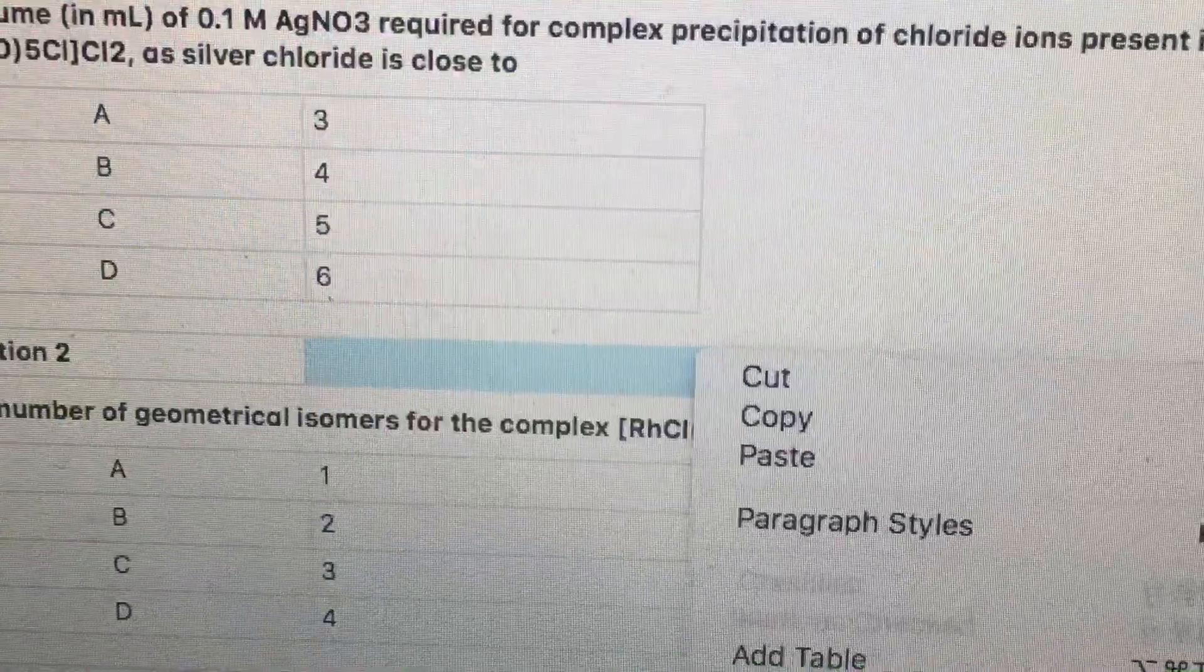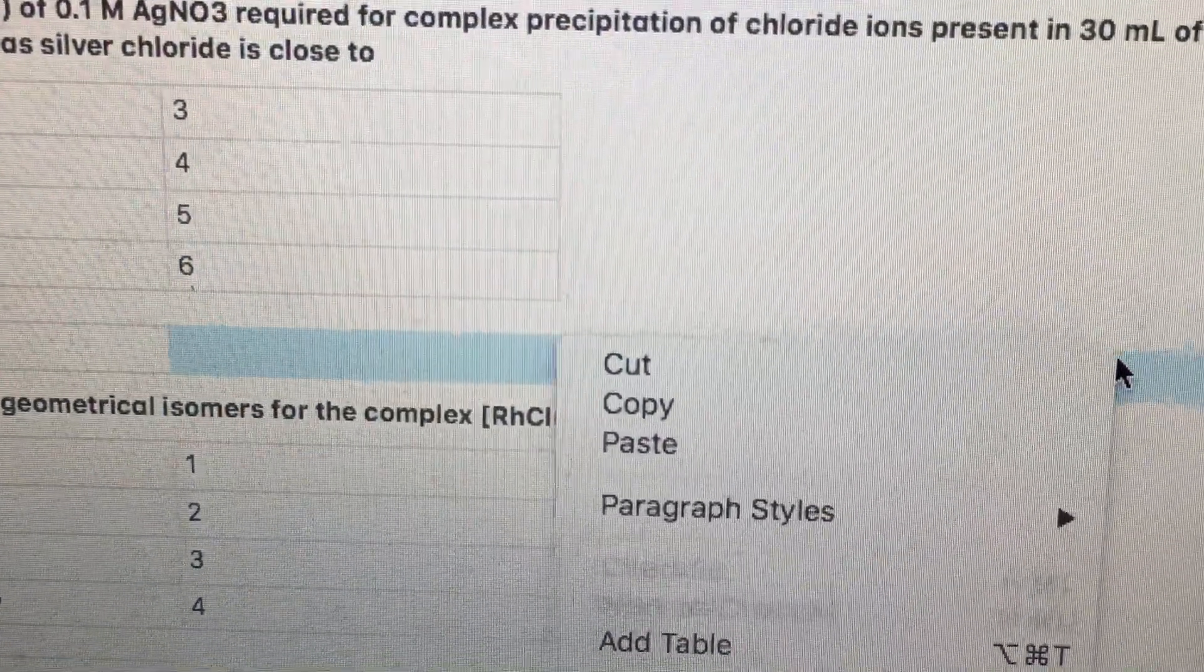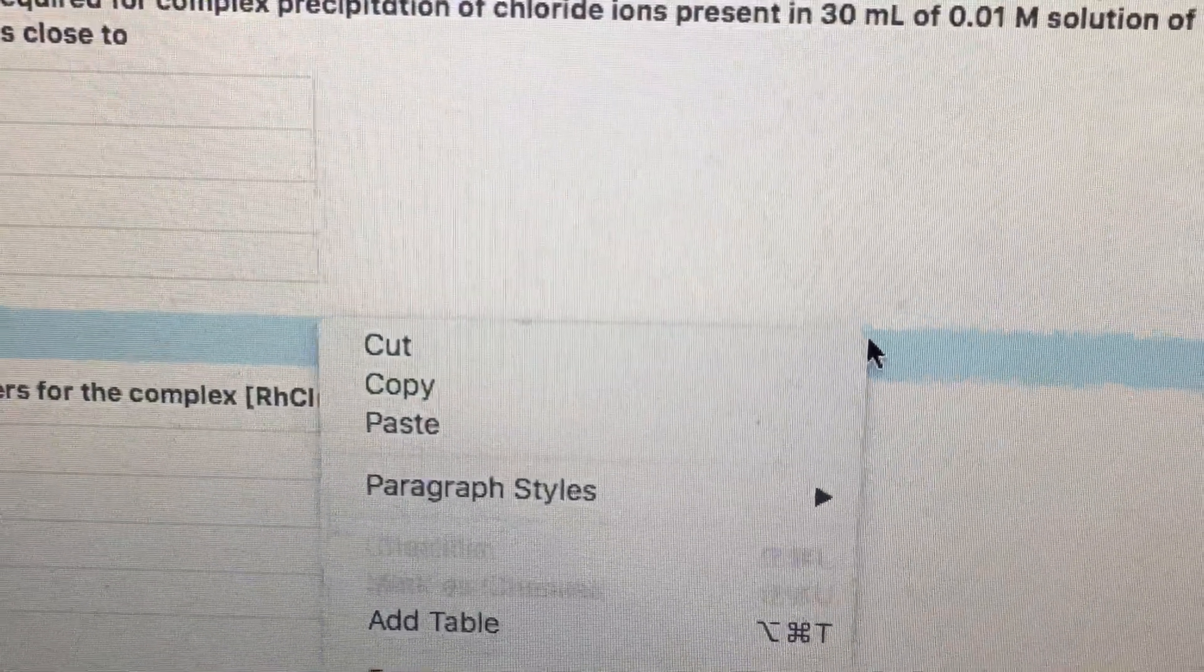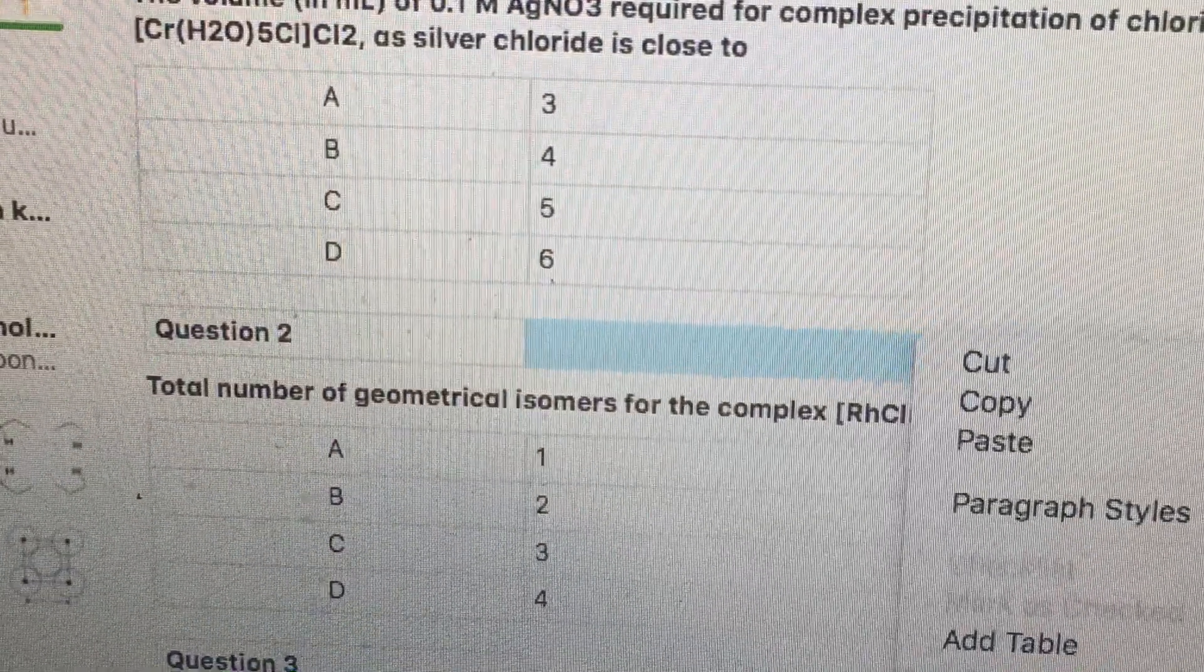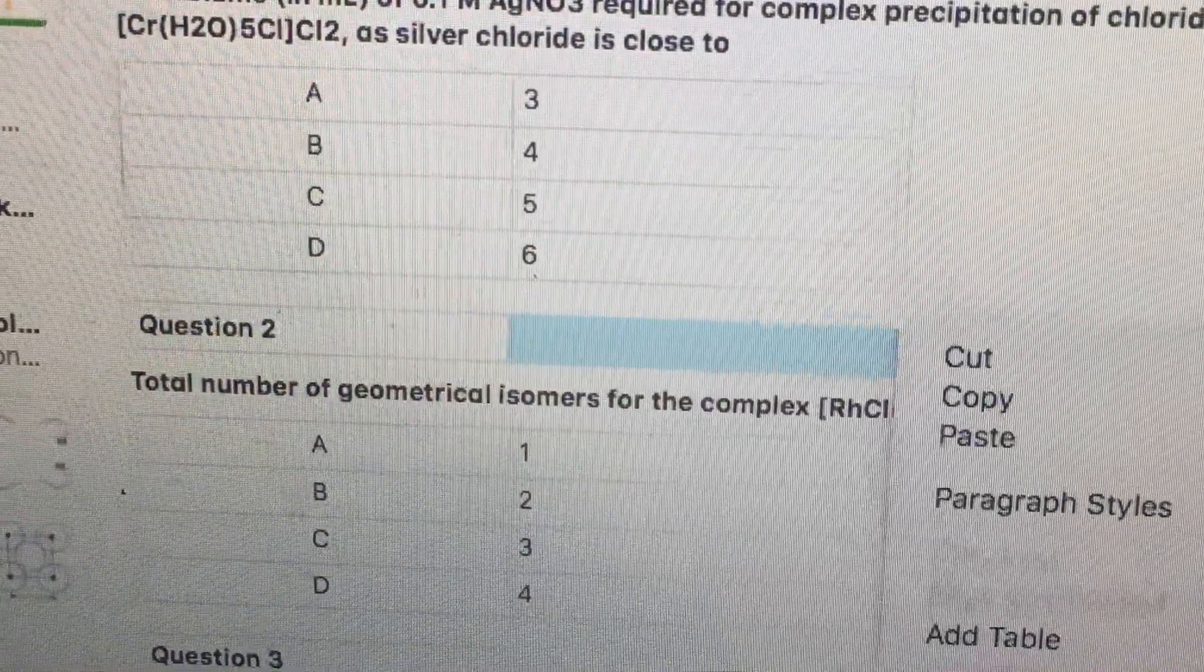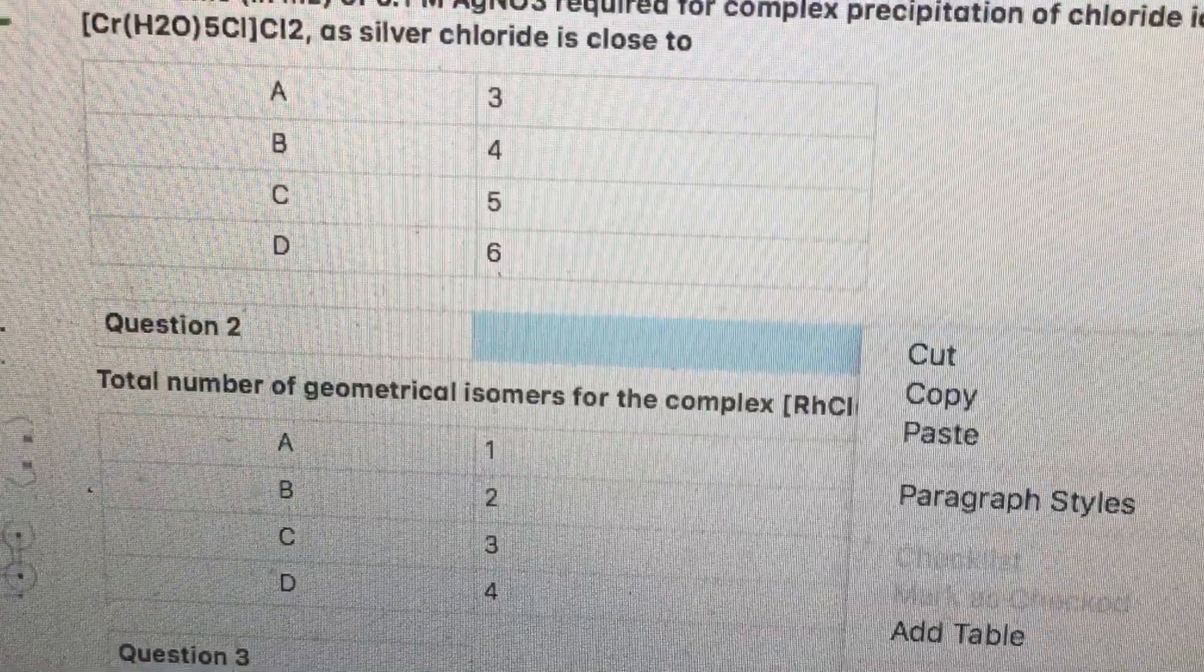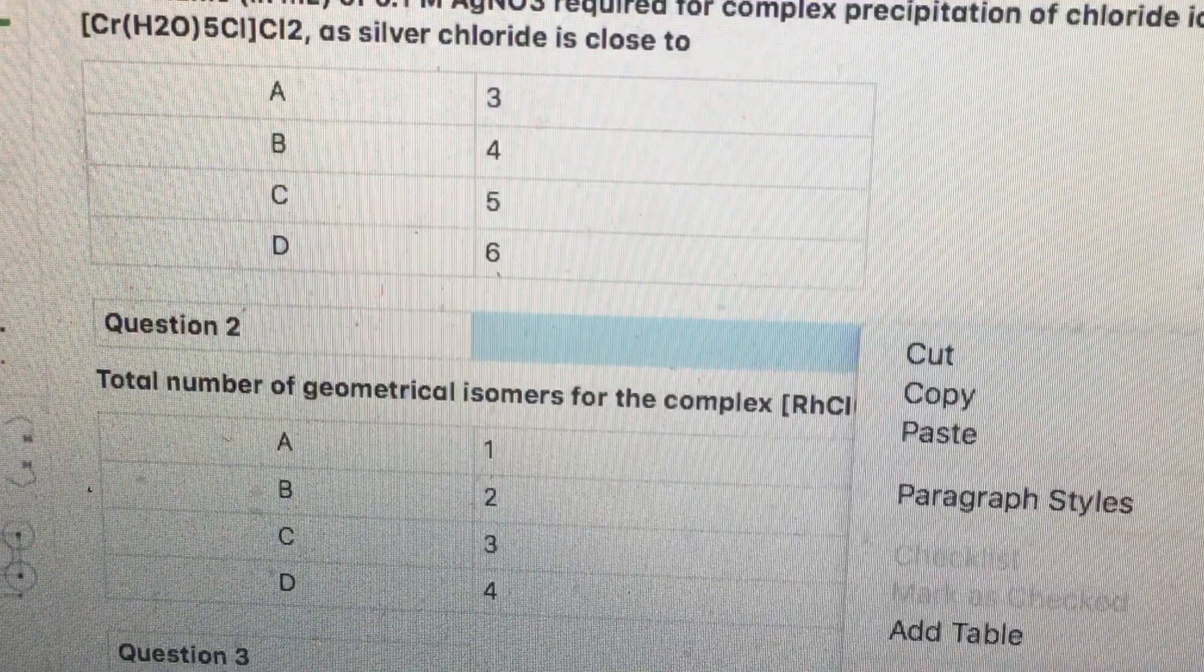The volume in ml of 0.1 molar silver nitrate required for complete precipitation of chloride ions present in 30 ml of 0.01 molar solution of pentaaquachlorochromium(III) chloride as silver chloride is close to. In this complex, two chlorides are outside the coordination sphere.